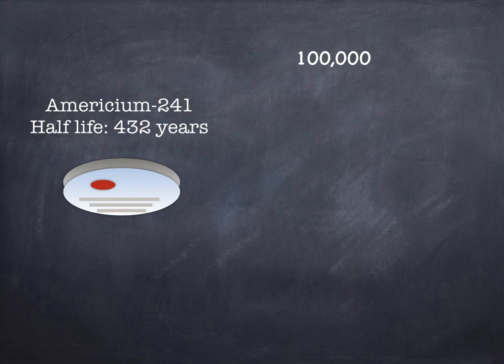We can use the half-life to predict how many atoms are going to be left in a sample after a certain amount of time. Sketching a flow diagram can really help with this. So let me give you an example. Here we've got some americium-241, that's the radioisotope that's used inside smoke alarms, and it's got a half-life of 432 years.